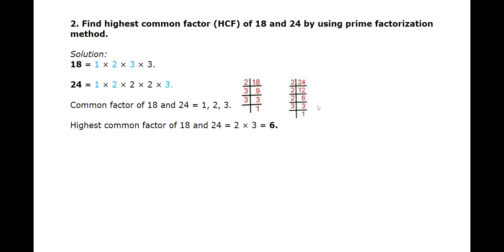The next number is 24. Again, we divide it by prime numbers till the last number is exactly divisible and we get the factors 1 × 2 × 2 × 2 × 3. The numbers which are in blue are common. The common factors of 18 and 24 are 1, 2, and 3. So the product of these three numbers, 1 × 2 × 3, is equal to 6, which becomes the highest common factor of 18 and 24.